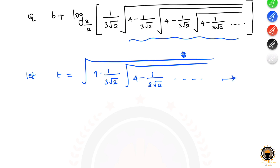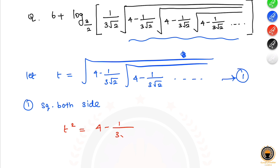Now, the first step is to square both sides — square on both sides. We get 3 root 2, and substituting the values in terms of t inside, it would have that value into t.